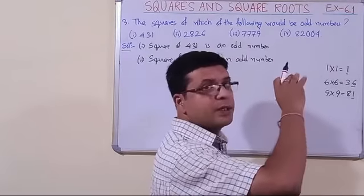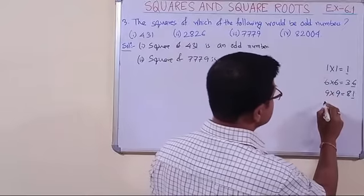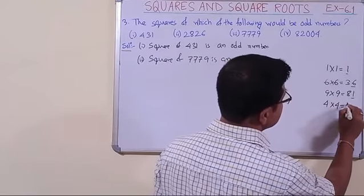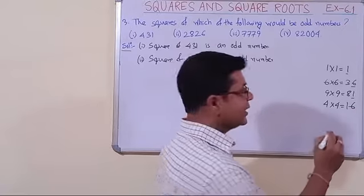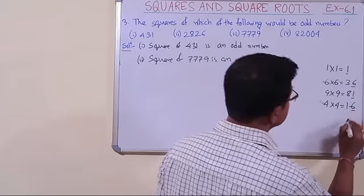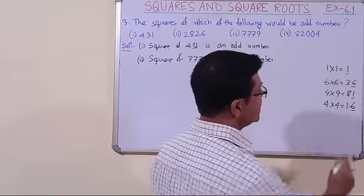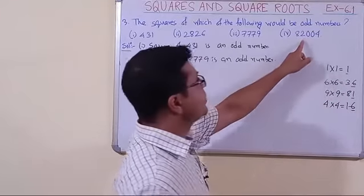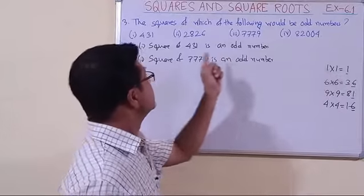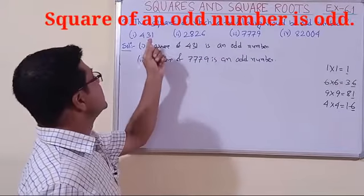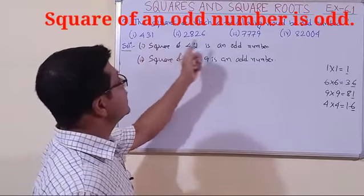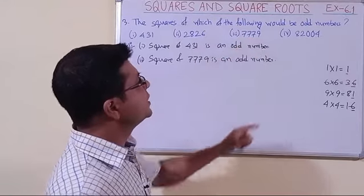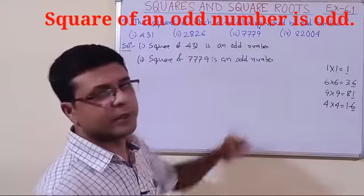The fourth number is 82004. To find the unit digit in its square, we check 4 into 4, which gives 16. The unit digit 6 is an even number, so the square of 82004 cannot be an odd number. Therefore, the answers are options 1 and 3 — the squares of 431 and 7779 are odd numbers.